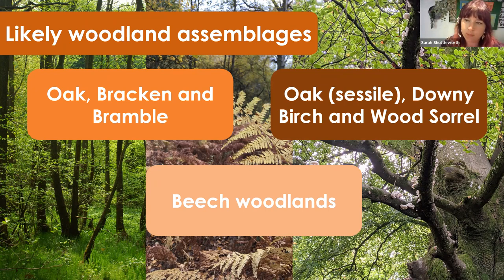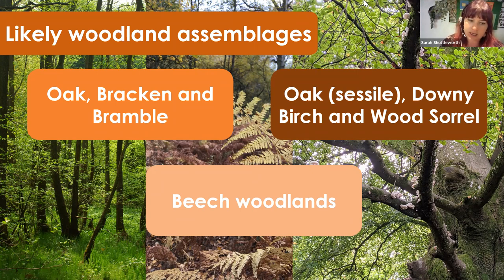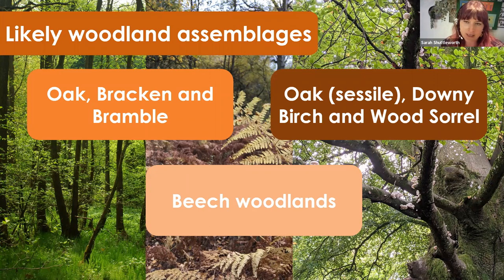Oak, bracken and bramble is usually on more neutral to calcareous or richer soils, whereas sessile oak with downy birch and wood sorrel is likely to be slightly more acidic. Then you might have your beech woodlands, which can often be slightly more acidic too. If you've got something very willow or alder-dominated it's likely a wet woodland, and if you've got native pine you're likely in the native pinewood and juniper category.